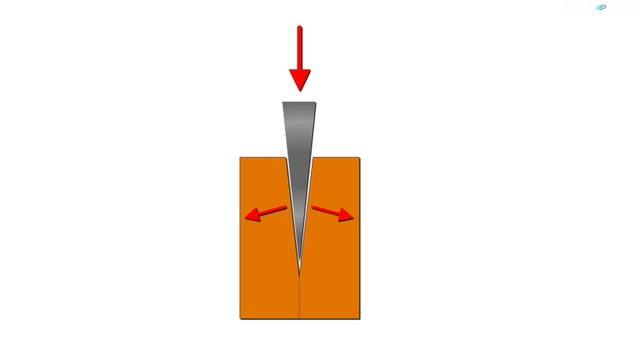The reason why wedges work like this can be well explained with this image. A downward force from the wedge produces forces perpendicular to the inclined surface of the wedge. So instead of cutting into an object, this causes the wedge to split the object.